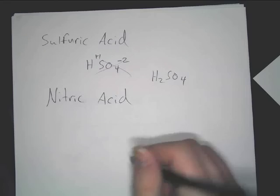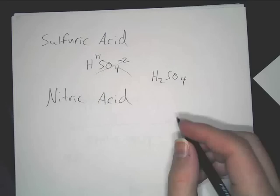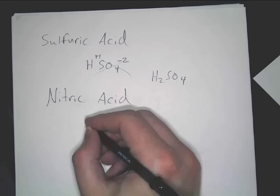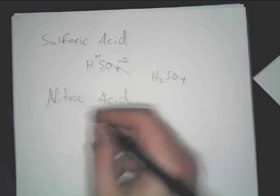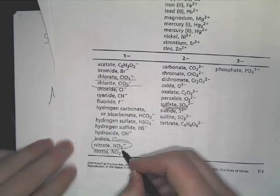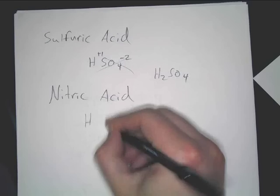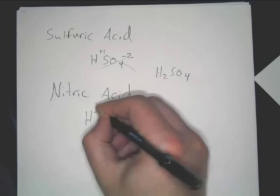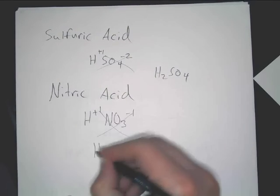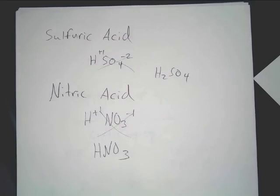For nitric acid: 'nitric' corresponds to 'nitrate' on the ion chart, which is NO3, negative 1. You put an H in front — it's positive 1 — and you crisscross. Since both charges are magnitude 1, it comes out to HNO3.